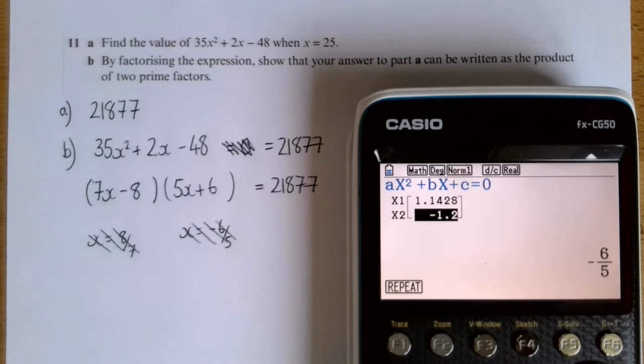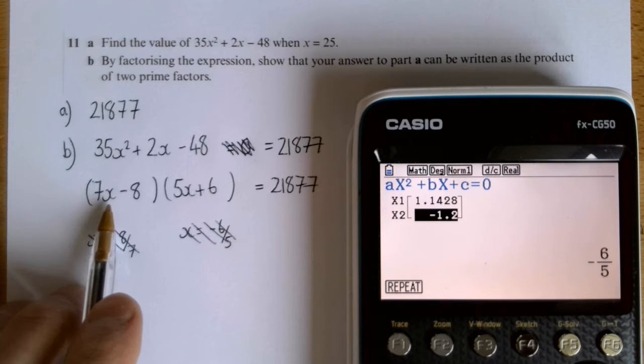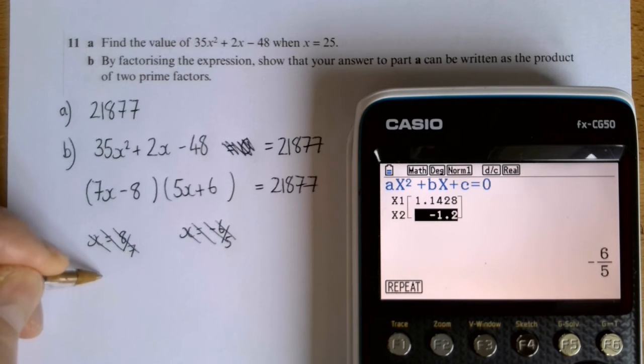And that means that this equals 21,877. So I'm sort of crossing out the evidence that it was a solve question, because it wasn't actually, I just used that as a tool. And now, if I make x equal to 25, well, 7 times 25 is 175, take away 8.